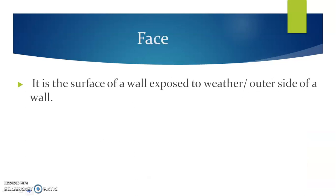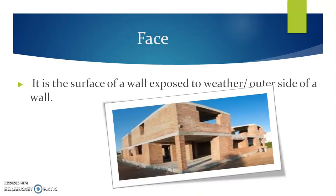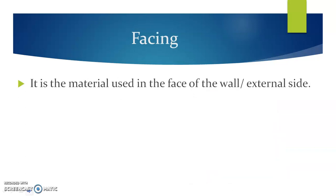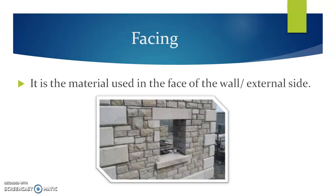Face. It is the surface of a wall exposed to weather, or the outside of the wall. In this figure, you will find the external surface of a building — it is called the face of a masonry construction. Facing is a material used on the face of the wall or the external side. This figure shows different kinds of materials used to form the face of a wall, in which different finished stones have been used for the facing. It is important from the point of view of elevation, particularly in stone masonry.